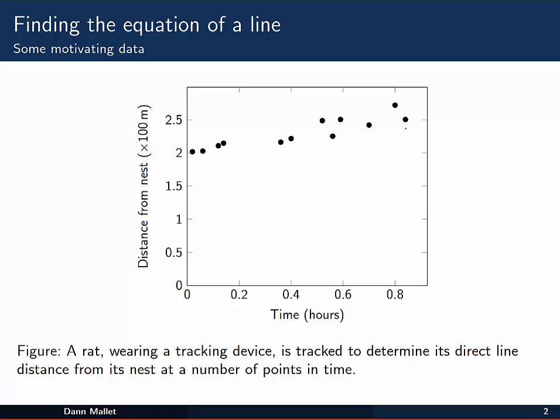Now these points kind of look like you might be able to draw a straight line through them. An approximation, if you will, over time, of the rat's distance from its nest. What we're going to be looking at is figuring out how we might be able to get an equation for that line, based on the data that we've got. And there are much more complicated methods that you'll learn about in other places, but for now we're just going to keep it simple and look at linear functions.